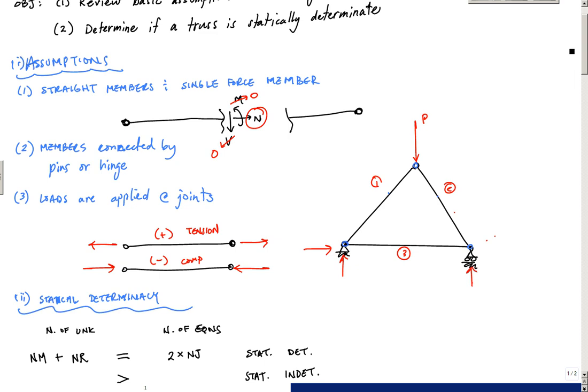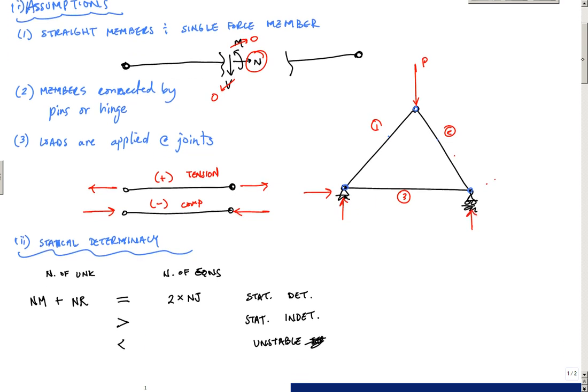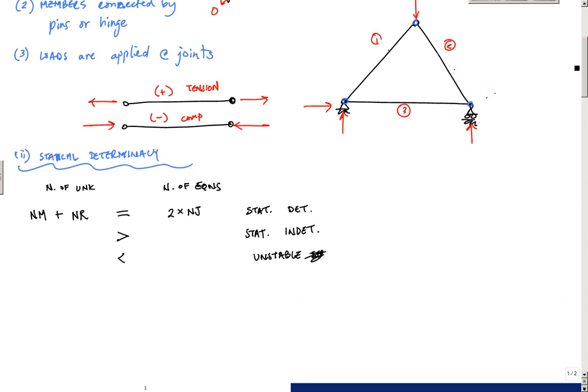The loads are all going to be applied at the joints. Even the reactions are going to be at joints. Tension is considered positive and compression is negative, which is consistent. And one of the first things we're going to do is check for determinacy. In the next video we'll talk about method of joints and do an example problem.